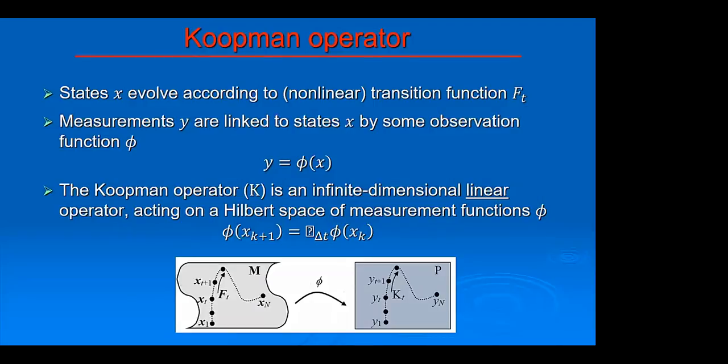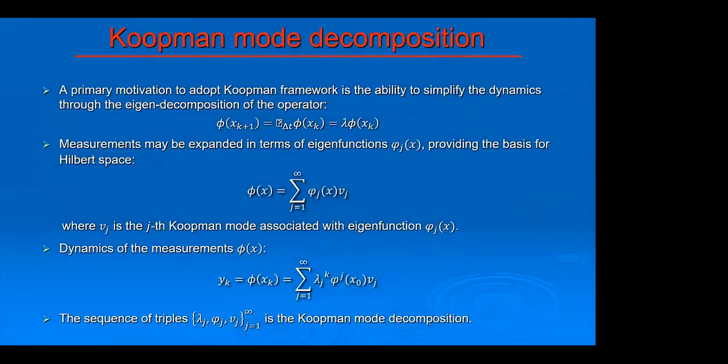In that other space, there can exist some other operator - that's the Koopman operator - which is linear, but unfortunately it is also infinite dimensional. The good thing is that if we do eigen decomposition of this Koopman operator, we get some eigenfunctions and eigenvalues, and we can keep only those eigenfunctions which have the largest eigenvalues. In that way, we reduce this model significantly and make it simpler.